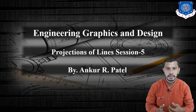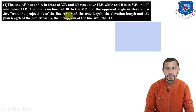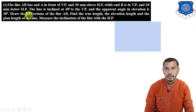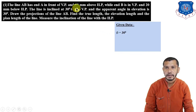Let's start with the first problem. A line AB has A in front of VP, 30 mm above HP, and B in VP, 20 mm below HP. The line is inclined at 30 degrees to the VP and the apparent angle in elevation is 30 degrees. Draw the projection of the line AB, find the true length, the elevation length, and the plan length. Measure the inclination of the line with the horizontal plane.